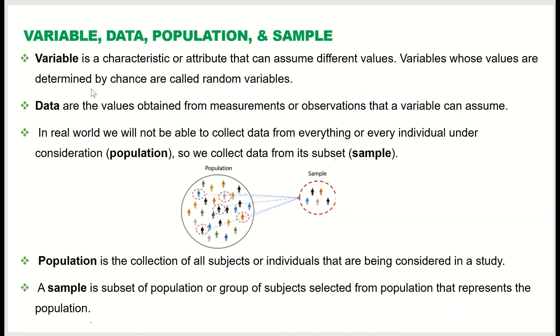Variables whose values are determined by chance are called random variables. So if the variables are selected randomly or selected by chance, then they are called random variables.